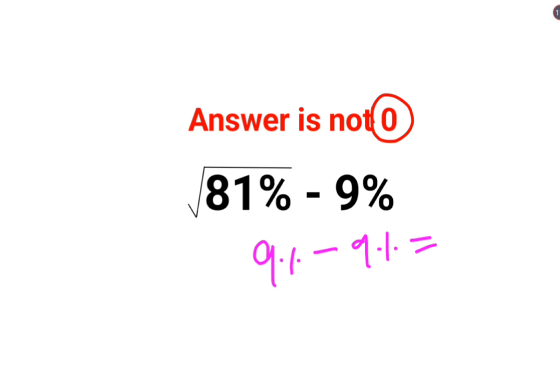The problem here is that while taking the root we missed out on a very basic step. 81% can be written as the root of 81 upon 100. So when you take the root out of this, you get 9 upon 10.